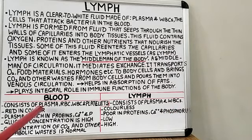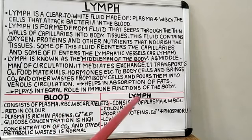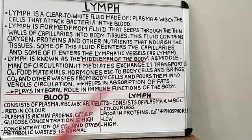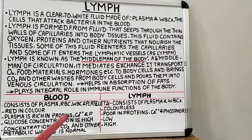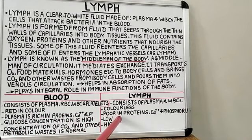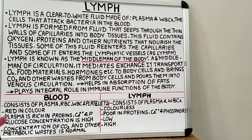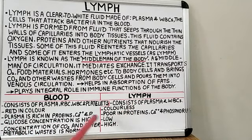Blood is red in color due to the presence of hemoglobin and RBCs. Blood plasma is rich in proteins, calcium and phosphorus, whereas plasma of lymph is poor in proteins, calcium and phosphorus. In blood, the concentration of glucose is high, whereas in lymph it is low.